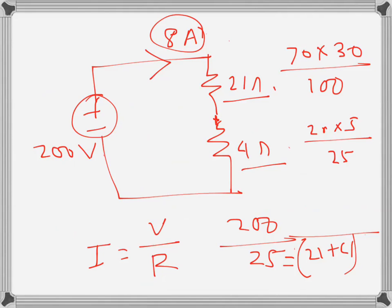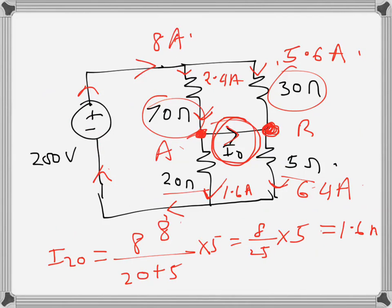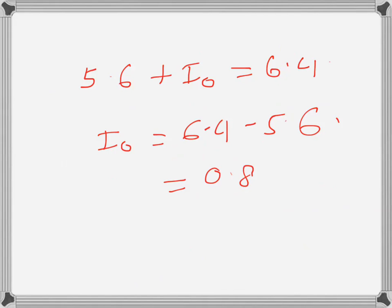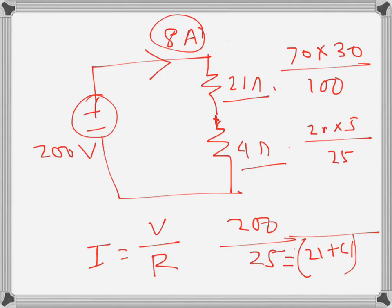If we write the same KCL at this node, let's call it B - basically these are the same node though. If we write KCL here, we should get the same answer. In this case, 5.6 is incoming current, i naught is also incoming, and 6.4 is outgoing. So 5.6 plus i naught equals 6.4. We get 6.4 minus 5.6, which is again 0.8 amps, that's 800 milliamps. We get the same result.